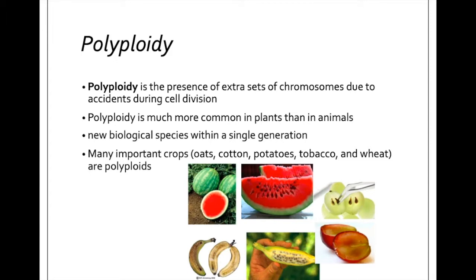Polyploidy is much more common in plants than animals. Polyploidy tends to result in better offspring than individual monosomies or trisomies, because all of the genes are still expressed at the same ratio. In animals this is not very accessible and usually results in a non-viable offspring. However, in plants we can see fertile, viable offspring when this occurs. So it can result in a brand new biological species in a single generation, because now this plant is genetically distinct from either of its parents. And if it can continue to reproduce asexually and create a robust amount of them, they might even be able to develop sexual reproduction.